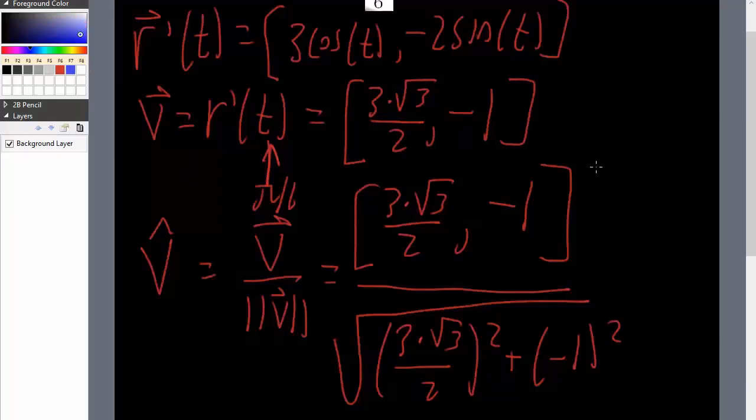We can't do much here when it comes down to simplifying. We have to use a calculator to do so, but this would essentially be what we want to find the unit tangent vector of r(t). And so this is going to be our answer.